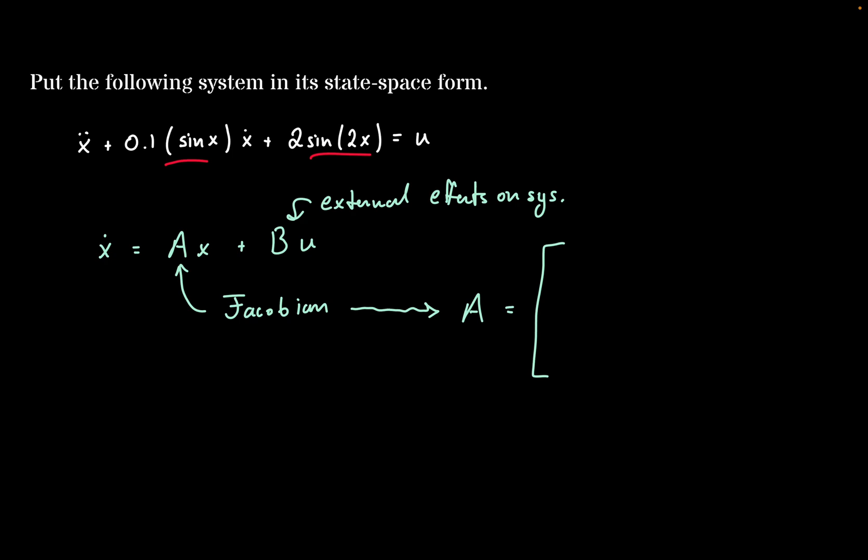For example, in this case we'll have two x's, and that's why we'll have a two by two Jacobian here, where we'll take the partial derivative of x1 dot with respect to x1, and then partial derivative of x1 dot with respect to x2, and then partial derivative of x2 dot with respect to x1, and then partial derivative of x2 dot with respect to x2.